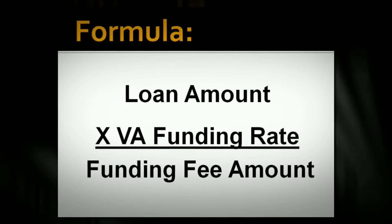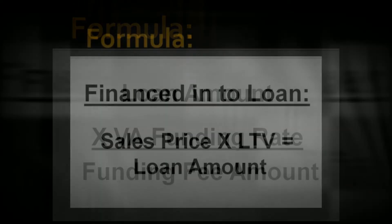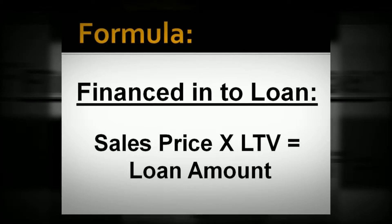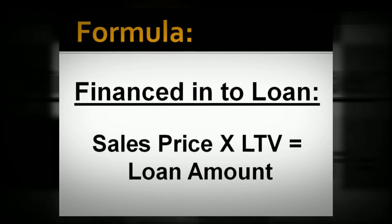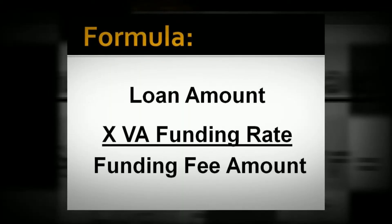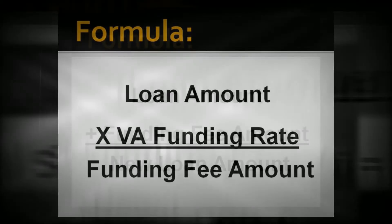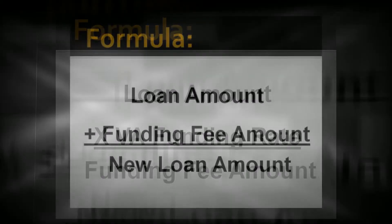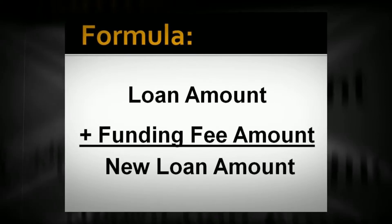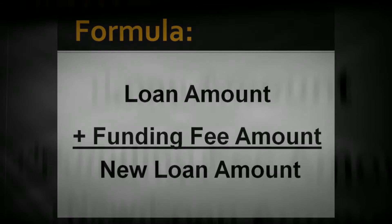If the fee is financed into the loan, you still find the loan amount and then multiply the VA funding fee rate by the loan amount, and that gives you the funding fee amount. Here's where it's different: you add that funding fee amount back into the loan amount, and that gives you a new loan amount.